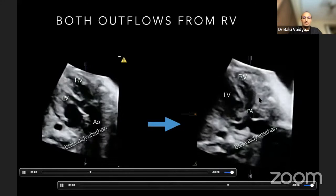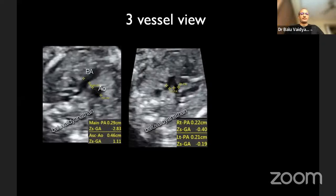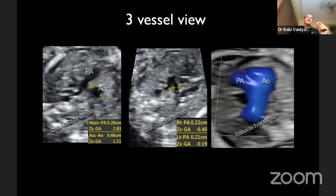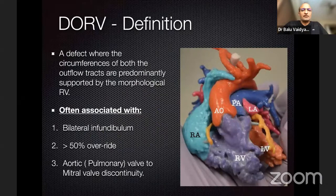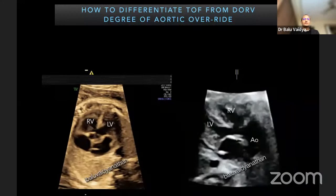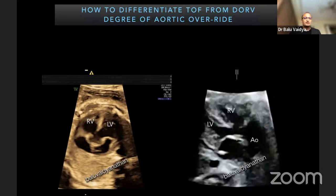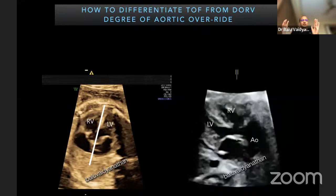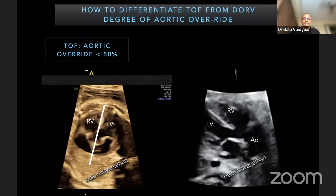The pulmonary artery is smaller than the aorta, so there is pulmonary stenosis. The three vessel view showed the PA is smaller than the aorta, just like you would expect in tetralogy. The findings in this case: a large malaligned VSD, aorta overriding substantially so that most of it is from the RV, and PA also from the RV with a smaller PA suggesting pulmonary stenosis. A double outlet right ventricle is defined as a lesion where both outflow tracks are predominantly supported by the morphological right ventricle. In fetal life, you can remember: more than 50% overriding — more than 50% of the aorta comes from the RV.